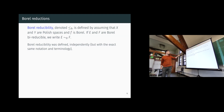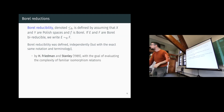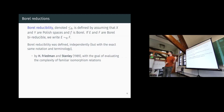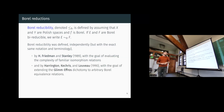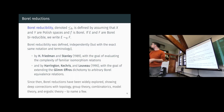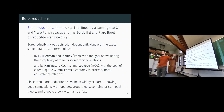Borel reducibility was introduced independently — a remarkable case of serendipity — with exactly the same notation and terminology in two papers. First, by Friedman and Stanley, with the goal of evaluating the complexity of isomorphism relations. And at exactly the same time by Harrington, Kechris, and Louveau, with the goal of extending the so-called Glimmer-Effros dichotomy to arbitrary Borel equivalence relations. Since then, Borel reduction has developed in a really marvelous way, proving a lot of deep connections with many other areas.